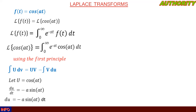Everything remaining after choosing u is our dv, so let dv equal e^(−st) dt. Integrating both sides to find v, the integral of e^(−st) dt gives v equal to e^(−st) / (−s). We now have our u, v, du, and dv values ready to apply integration by parts.